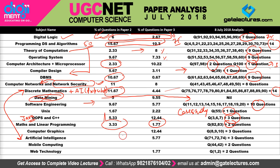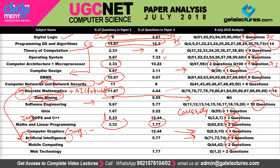In computer graphics there is a notable change — the number of questions has dropped significantly. Computer graphics, including image processing, had very few questions asked. In artificial intelligence, three questions were asked — no huge change, keeping in mind some portions were combined with discrete mathematics. From mobile computing, only two questions were asked, and one of those could arguably be categorized under computer networks. In web technology, two questions were asked — not a huge change.